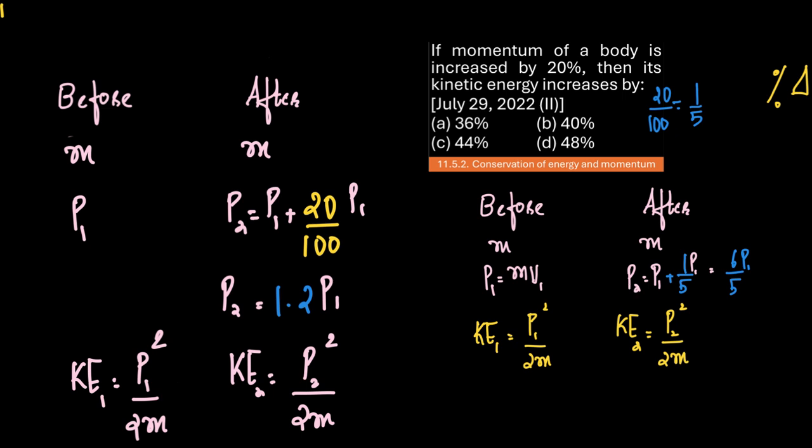Given that momentum is increased by 20%, which means P2 is equal to P1 plus 20 by 100, which is 1 by 5, which is equal to 6 by 5 P1. Or you can take that after the increase, P2 is equal to P1 plus 0.2, which gives 1.2 P1.